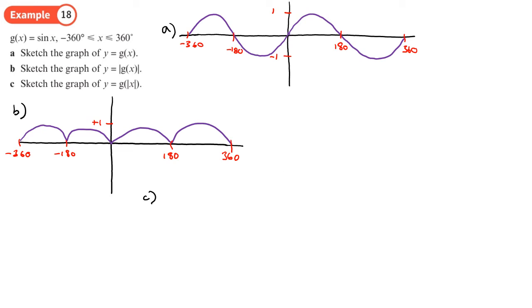And then c, it's just around the x. So this time we take the positive x part of the graph and we reflect it to the negative x part of the graph.